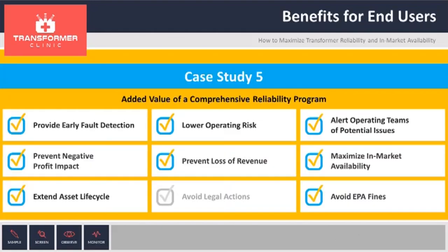The benefits for this case: we were able to keep the transformer in service for eight months. One of the problems is having to wait for transformers to be delivered — waiting time goes between eight months to up to two years depending on size. So by the time they knew there was a problem, they ordered the new transformer and were still able to keep the old transformer in service while waiting for the new one. With those eight extra months in operation, they were able to pay for the new transformer. There was no catastrophic failure, no contamination on the river, no EPA fines. We were able to pinpoint the location and maintain the transformer in service.